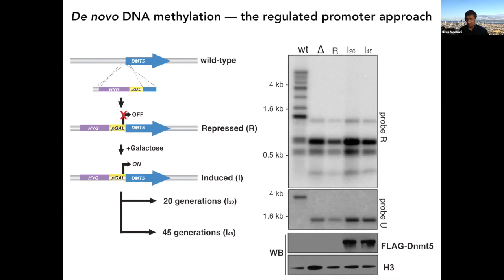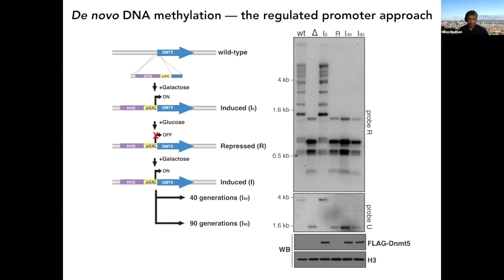We knocked in the construct under inducing conditions from the start — it works fine, tracks look just like wild type. But if you repress the gene and lose methylation, then turn it back on for 40 or 90 generations, the methylation just doesn't come back.